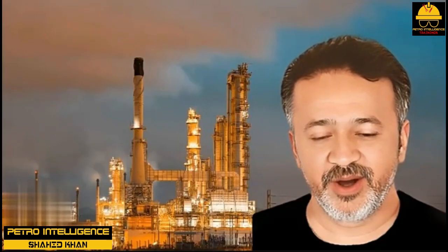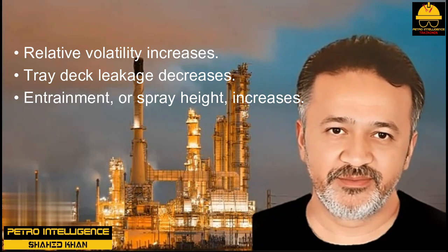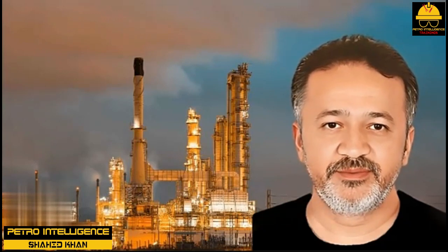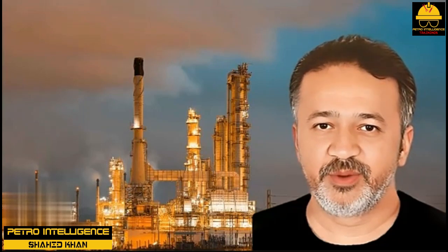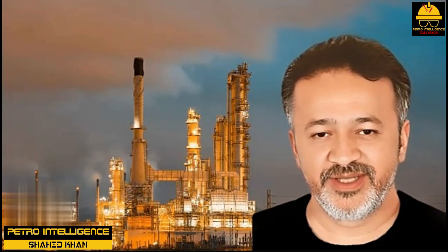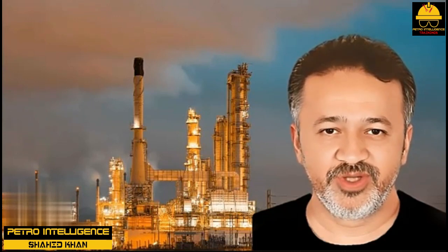Incipient Flood Point. As an operator reduces the tower pressure, three effects occur simultaneously. First, relative volatility increases. Second, tray deck leakage decreases. Third, entrainment or spray height increases. The first two factors help make fractionation better; the last factor makes fractionation worse. How can an operator select the optimum tower pressure to maximize the benefits of enhanced relative volatility and reduce tray deck dumping without unduly promoting jet flooding due to entrainment? To answer this question, we should realize that reducing the tower pressure would also reduce both the tower top temperature and the tower bottom temperature. Therefore, the change in these temperatures by themselves is not particularly informative. But if we look at the difference between the bottom and top temperatures, this difference is an excellent indication of fractionation efficiency. The bigger this temperature difference, the better the split.